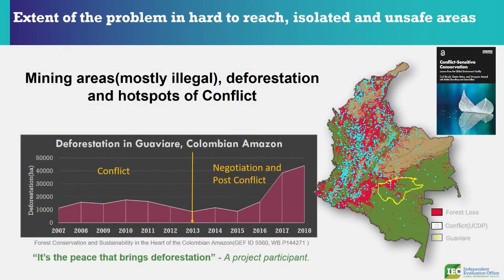This approach also gives very interesting insights. Here at a project site implemented by the World Bank, you can see something paradoxical: it's peace that brings deforestation. That's what one project participant told us, and looking at the data you can clearly see that when you're in negotiation and post-conflict, the flood gates open and everything is up for grabs. This means we need more environmental action in post-conflict situations and a look at the entire conflict cycle — that was one of our recommendations to GEF.